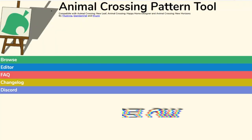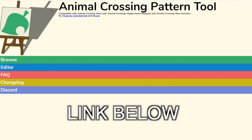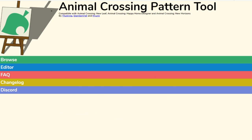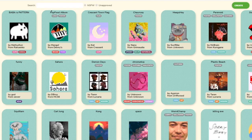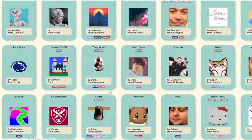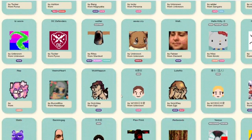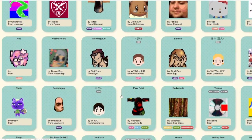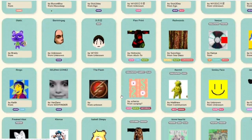Once you do that, you're going to want to head over to a website on your computer called Animal Crossing Pattern Tool. You can literally upload any of your photos to this website and it will make it into a perfect picture or design for anything you want to do inside of Animal Crossing. You can also go to the Browse section and see what other people have done — there are already a lot of ones that have been made and tuned up to be perfect.